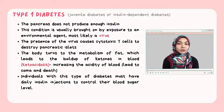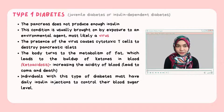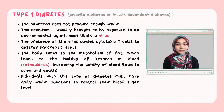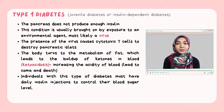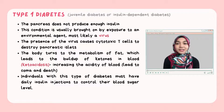Type 1 diabetes, also called juvenile diabetes, occurs when the pancreas does not produce enough insulin. It is usually brought on by exposure to an environmental agent, most likely a virus, which causes cytotoxic T cells to destroy pancreatic islets. The body turns to fat metabolism, leading to a buildup of ketones in the blood and increased blood acidity, which can lead to coma and death.